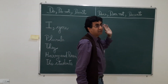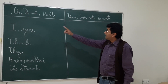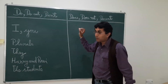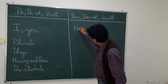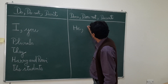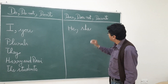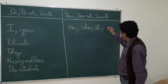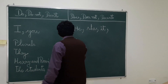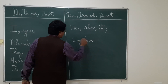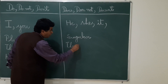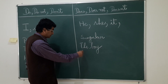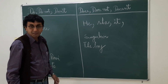Now, if I go to does, let's see what happens to does. Since I have said I do not, I cannot say I does not — it will be wrong. So where does does go? He does not. She does not. It does or does not. And any singular, any singular noun — this is where does or does not is used.